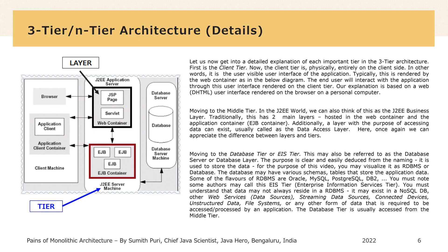Moving to the middle tier. In the J2EE world, we can also think of this as the J2EE business layer. Traditionally, this has two main layers hosted in the web container and the application container, the EJB container. Additionally, a layer with the purpose of accessing data can exist, usually called as the data access layer.